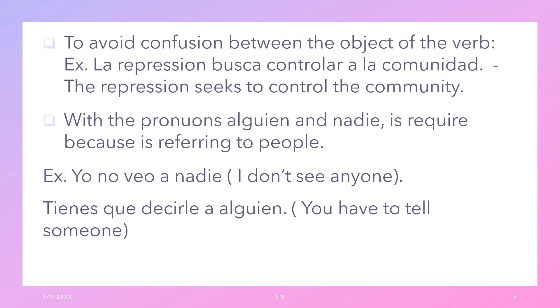The Personal A is also used to avoid confusion between the object and the verb. For example, 'La represión busca controlar a la comunidad.' With the pronouns alguien and nadie, it is required to use the Personal A because they refer to people. For example, 'Yo no veo a nadie' — I do not see anyone. Or, 'Tienes que decirle a alguien' — You have to tell someone.